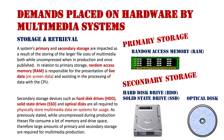RAM, as the primary memory source of the computer, works in conjunction with the CPU. Secondary storage devices such as hard disk drives, solid state drives, and optical disks are required to physically store the multimedia data on a system. While uncompressed during production, these files consume a lot of memory and drive space. Therefore, large amounts of primary and secondary storage are required in multimedia production.